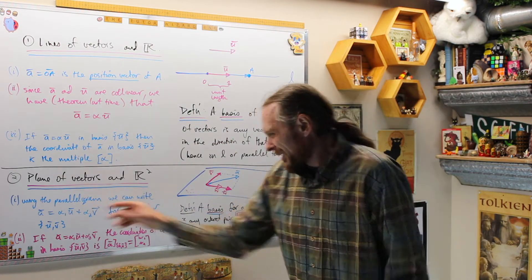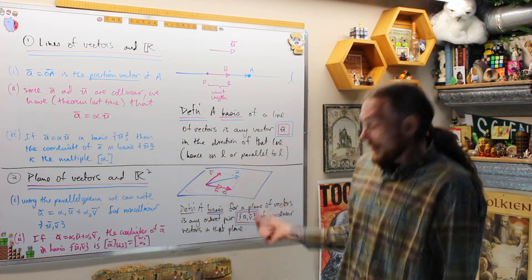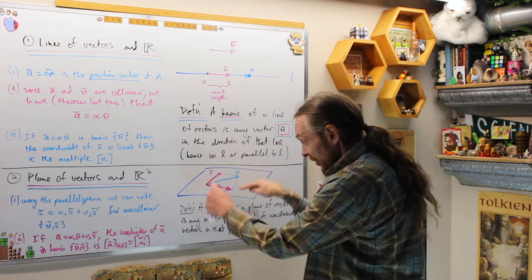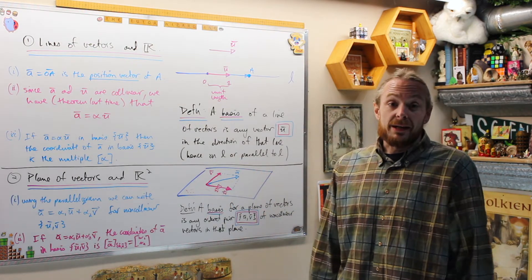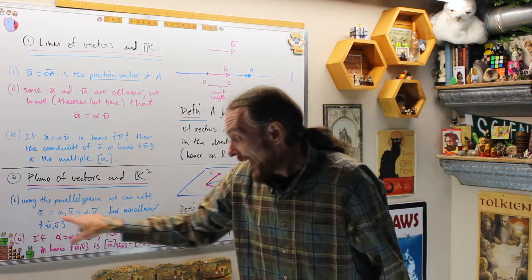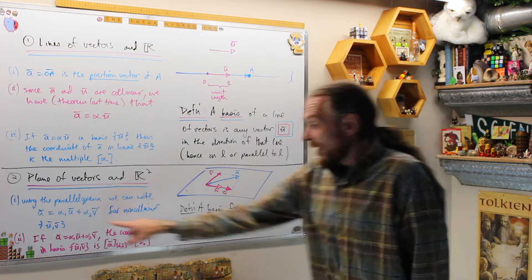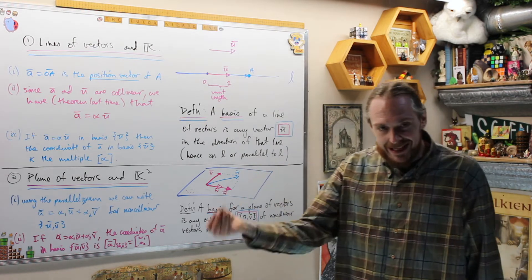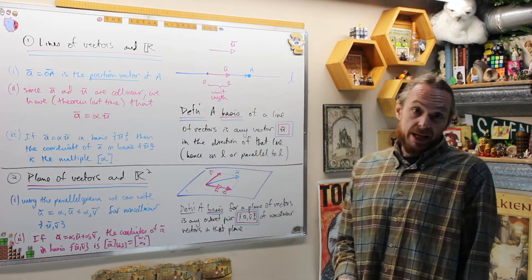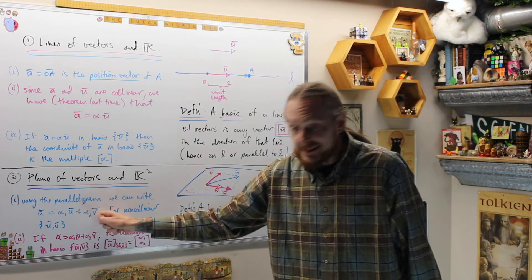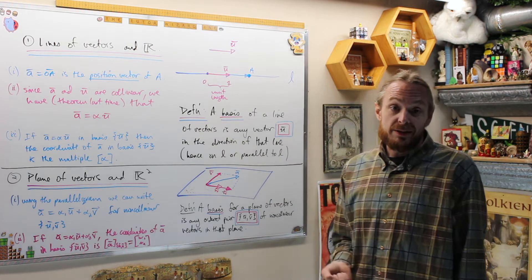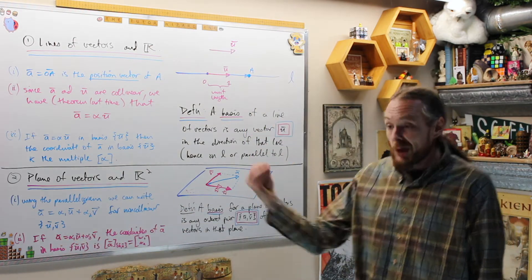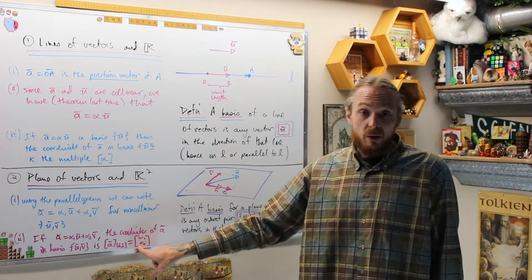Using a parallelogram law, there has to be some multiple of U and some multiple of V where we get the sides of this parallelogram, and then vector A will be the diagonal. Using the definition of addition, we can write A as a sum — some multiple of U plus some multiple of V. Once we arbitrarily fix any two non-co-linear vectors U and V in that plane, they are automatically a basis. Every other vector can be written as a linear combination of those two vectors uniquely, and the coordinates of A in that basis are those coefficients.